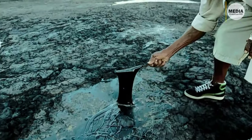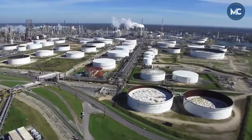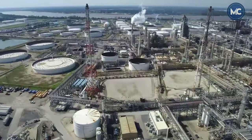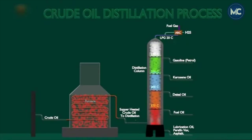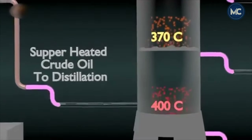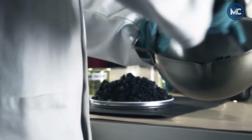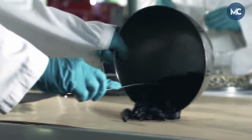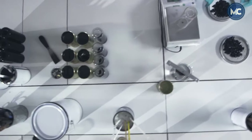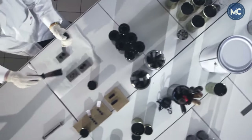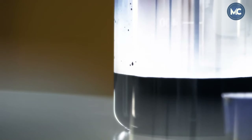Bitumen, also known as asphalt, is a highly viscous and sticky black or brown material that is a byproduct of petroleum refining. Bitumen is derived from crude oil during the refining process — it is the heaviest fraction that remains after the lighter components such as gasoline and diesel have been separated. Bitumen is a complex mixture of hydrocarbons including asphaltenes, resins, and aromatics. Its composition can vary depending on its source and the refining process. Bitumen is highly viscous at room temperature, meaning it is thick and does not flow easily, but it becomes more fluid when heated.